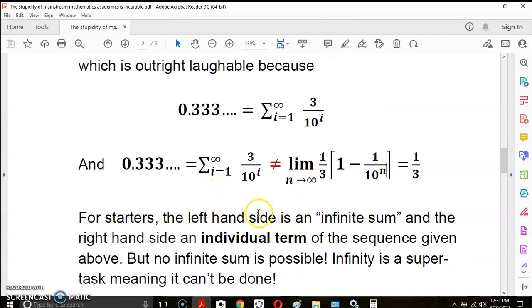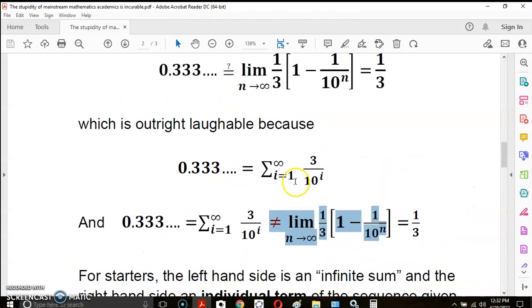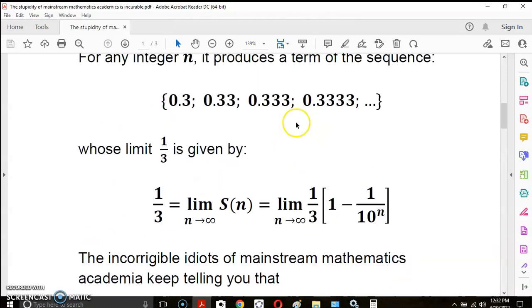For starters, the left-hand side is an infinite sum. It's not a limit. 0.333 dot dot dot is equal to this. And if any of you know what this Greek sigma means, it stands for sum. And that little piece of crap lying on its side there is called infinity. And the right-hand side is an individual term, this right-hand side is an individual term of the sequence given above, of this sequence here.